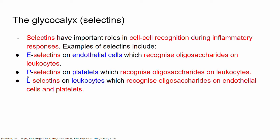Another type of selectins are the P-selectins, which can be found on the surface of platelets. These proteins recognize oligosaccharide sequences on leukocytes. The third major type is L-selectins, which can be found on leukocytes. So: P for platelets, L for leukocytes, E for endothelial cells. L-selectins are expressed on the cell membrane of leukocytes and they recognize oligosaccharide sequences on both endothelial cells and platelets.